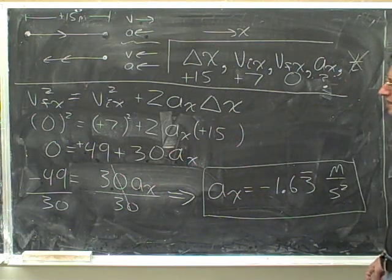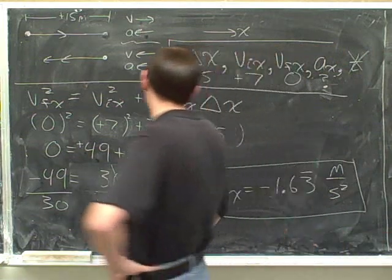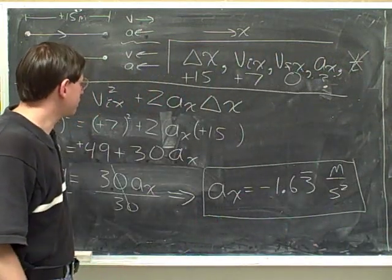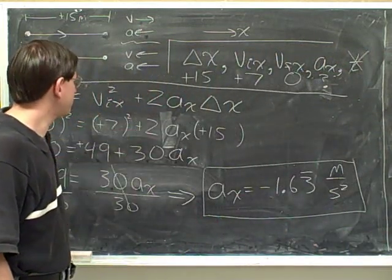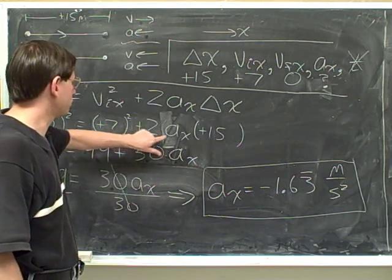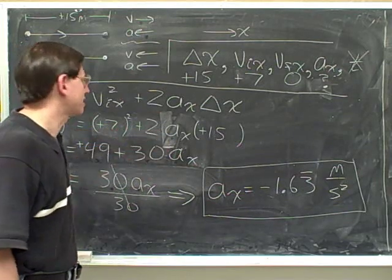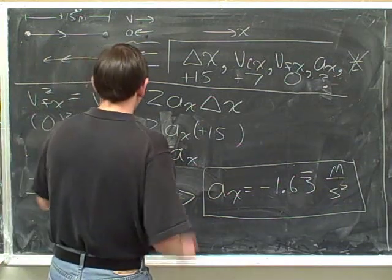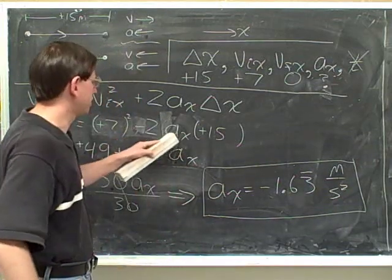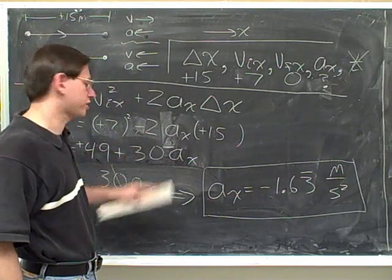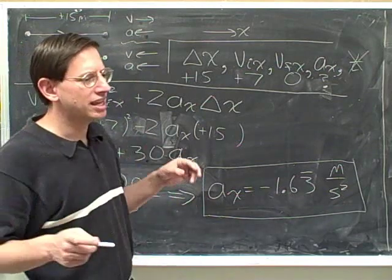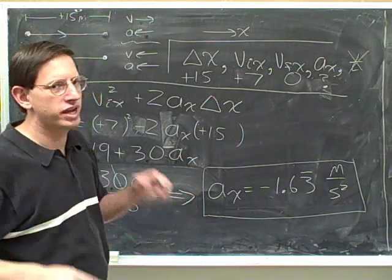Let me say something else about that. I think some people, when they were doing this problem, they might have been tempted to just say, when they're plugging in, they might have been tempted to say that this is minus 2 times the acceleration, since they know the acceleration is going to be negative. That is, a lot of people might have been tempted to put a minus sign here to take into account that the acceleration is negative. Now in a way, that is in a way a kind of valid way to solve the problem.